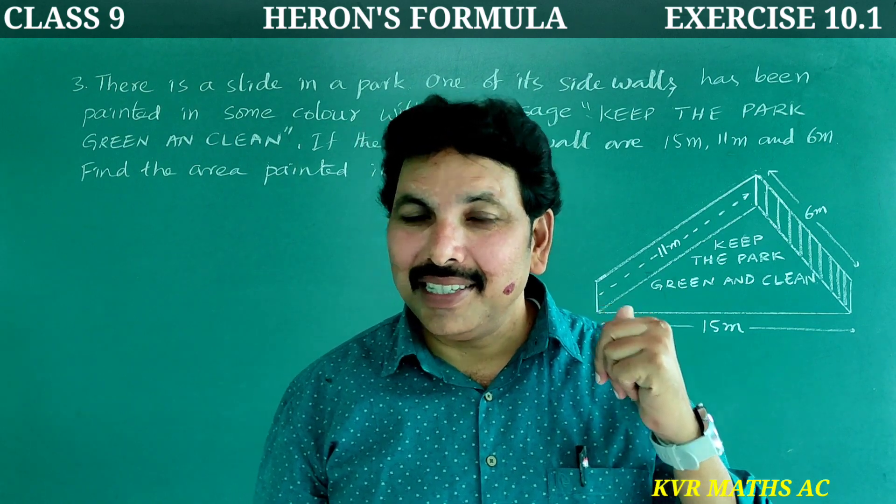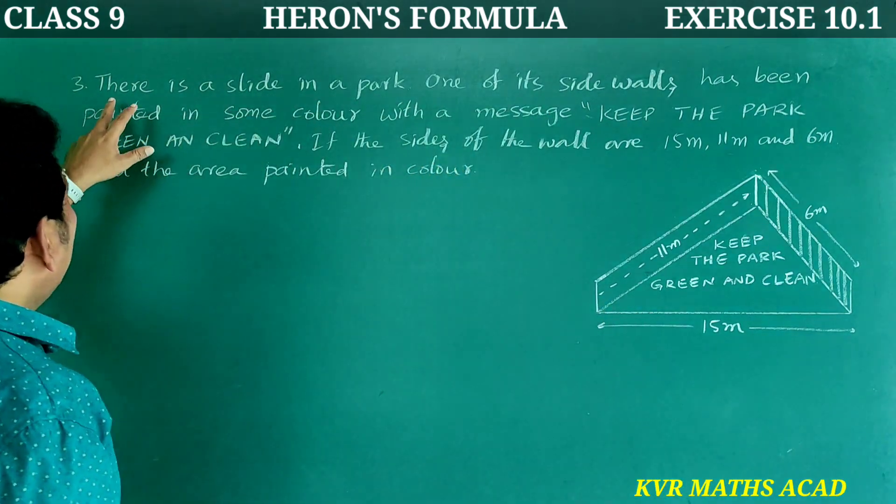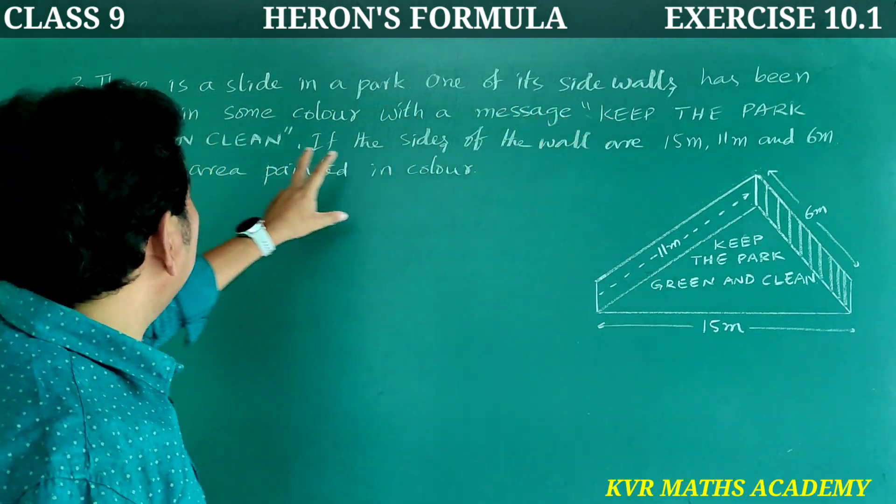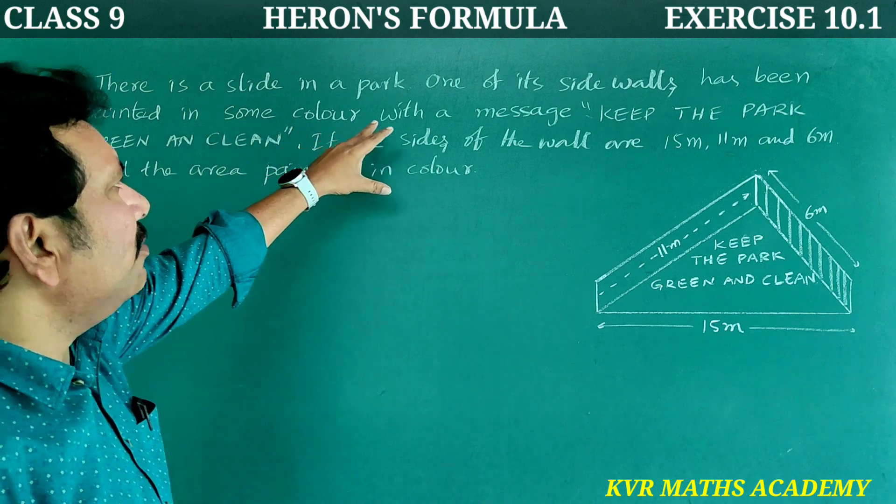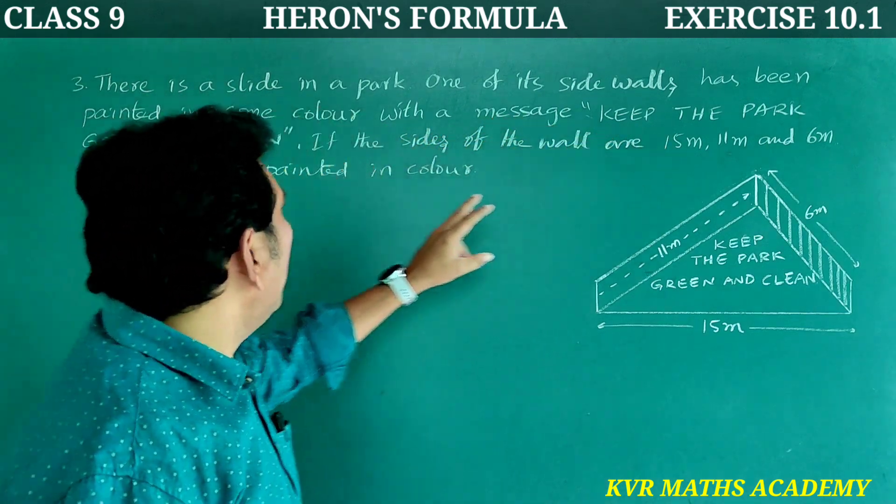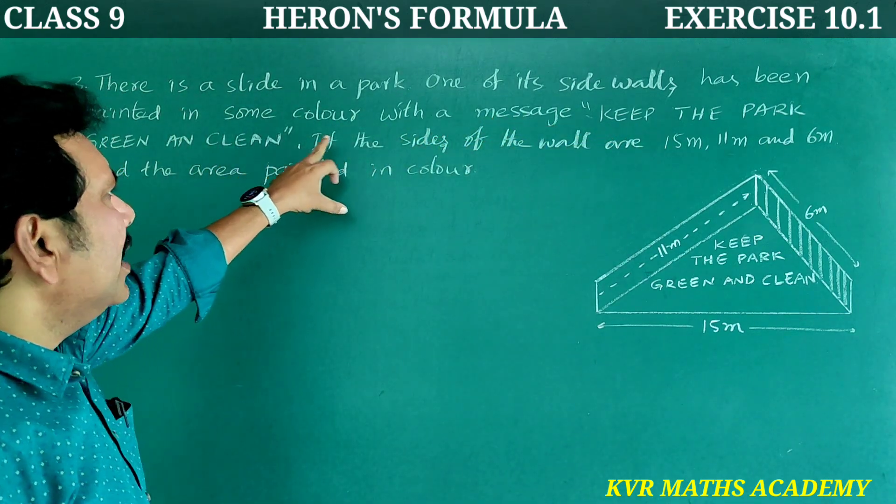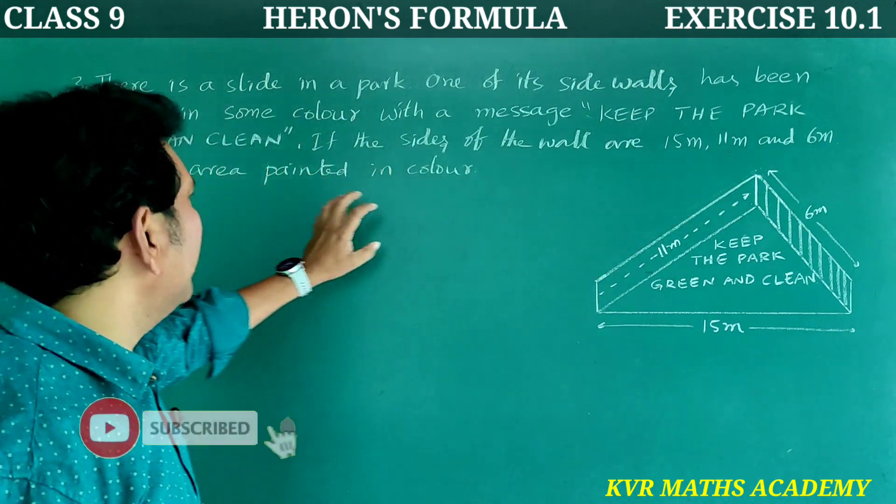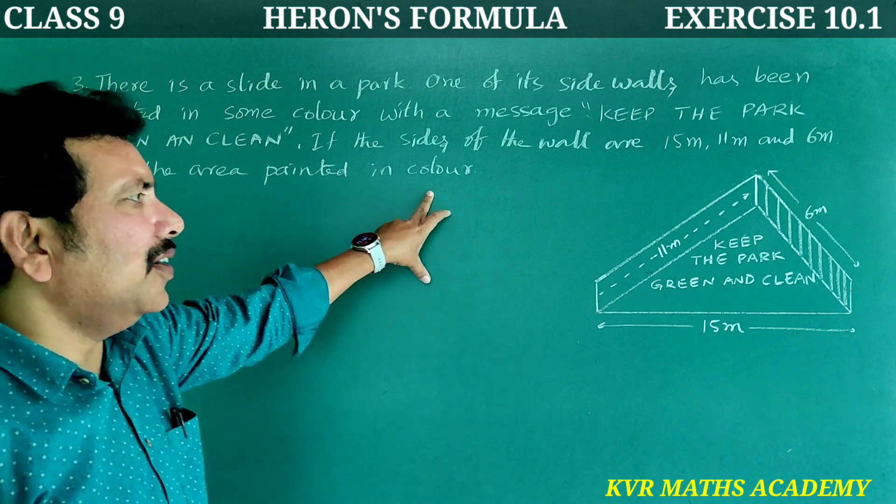Yes, let's go through this. Third question. There is a slide in a park. One of its sidewalls has been painted in some color with a message: Keep the park green and clean. If the sides of the wall are 15 meters, 11 meters and 6 meters, find the area painted in color.